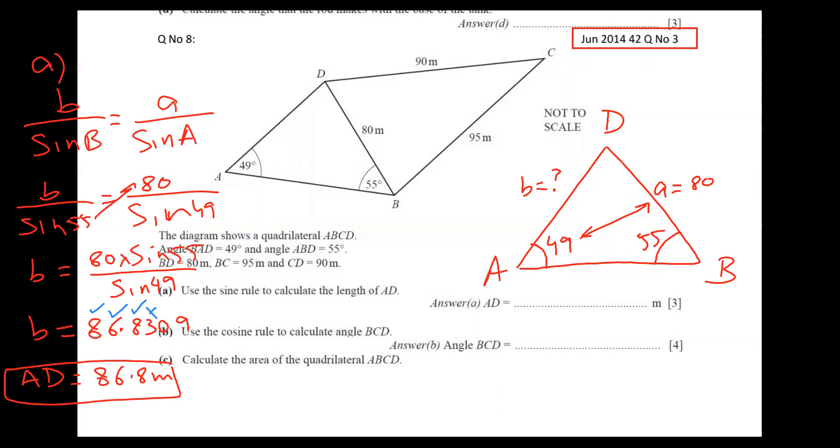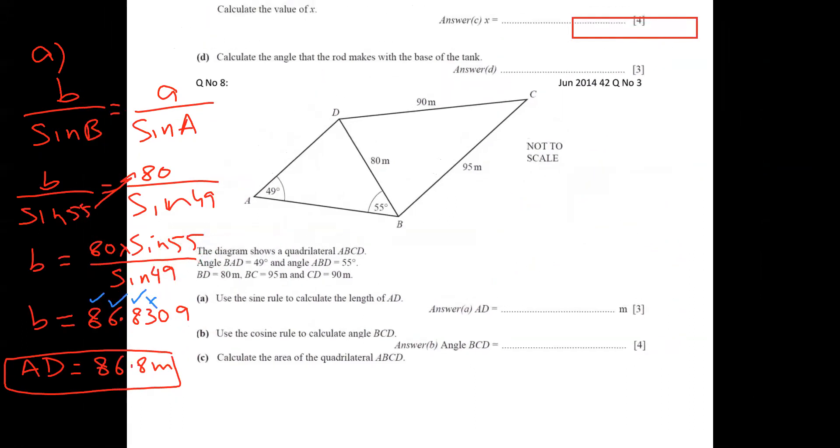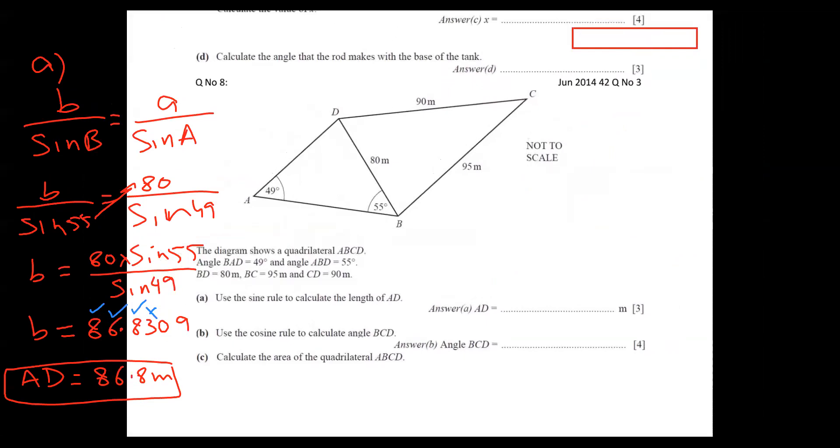We got the first part answer so easily. So this triangle is finished. Now I'm erasing this triangle and going to do the next part. So next part is very clear. Next part, let's talk about. He said use cosine rule to find angle BCD. Middle letter BCD - the middle letter is called C, and this is my question.